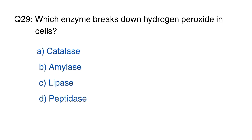Question number 29. Which enzyme breaks down hydrogen peroxide in cells? The right option is option A, catalase.